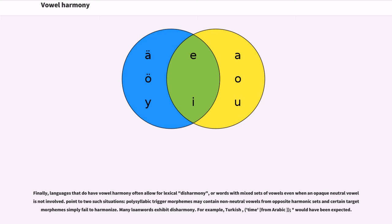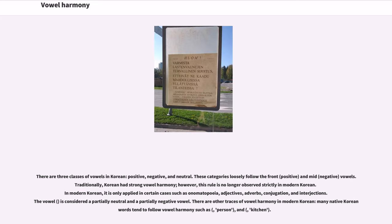Languages that do have vowel harmony often allow for lexical disharmony, or words with mixed sets of vowels even when an opaque neutral vowel is not involved. Polysyllabic trigger morphemes may contain non-neutral vowels from opposite harmonic sets, and certain target morphemes simply fail to harmonize. Many lone words exhibit disharmony. There are three classes of vowels in Korean: positive, negative, and neutral. These categories loosely follow the front and mid vowels.